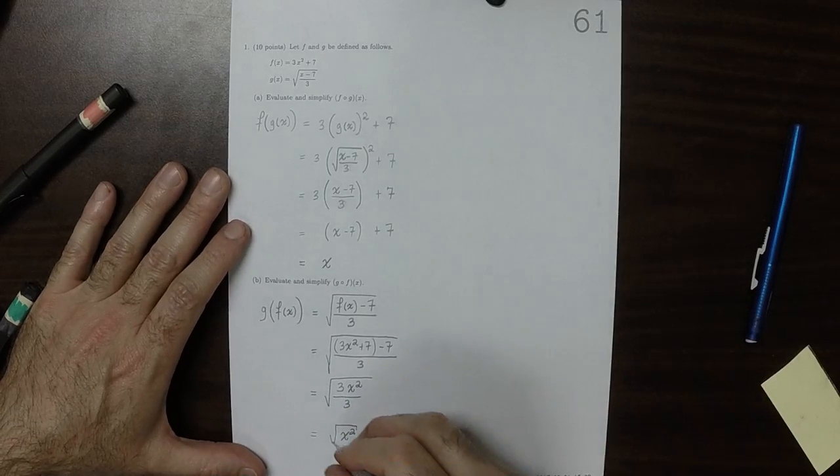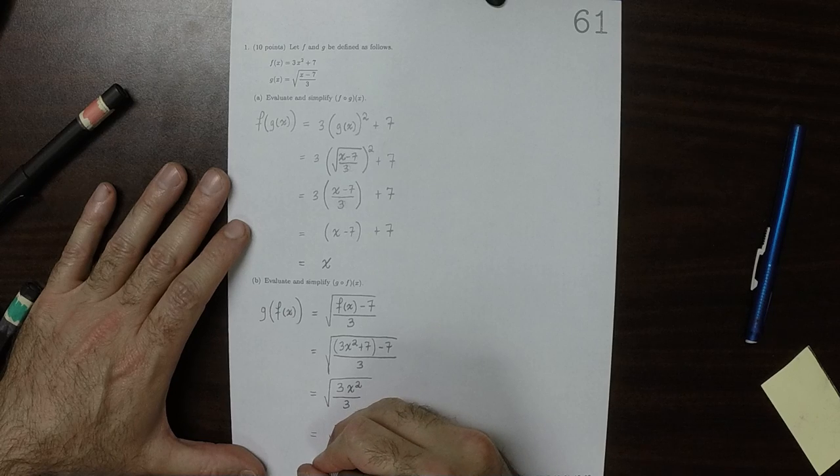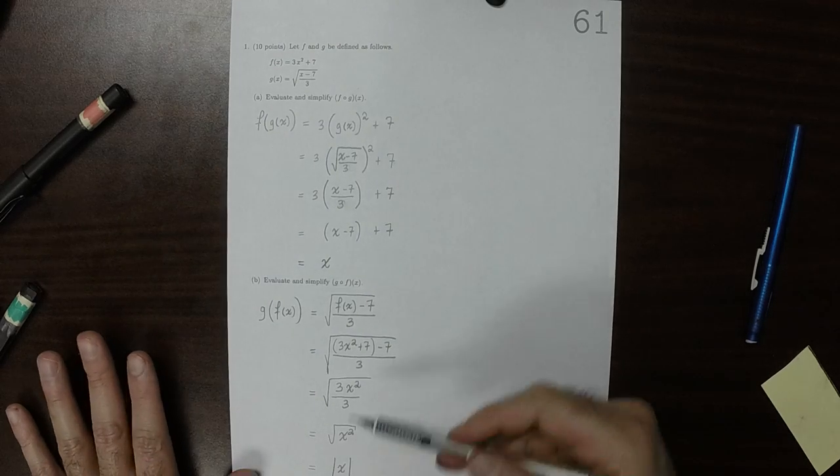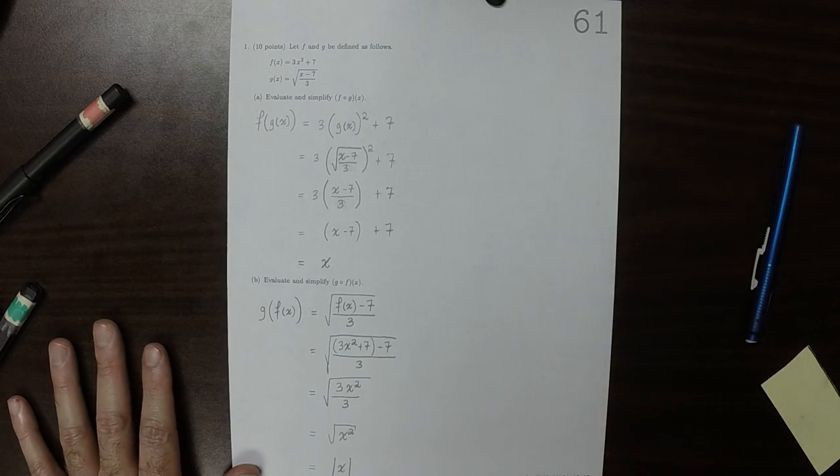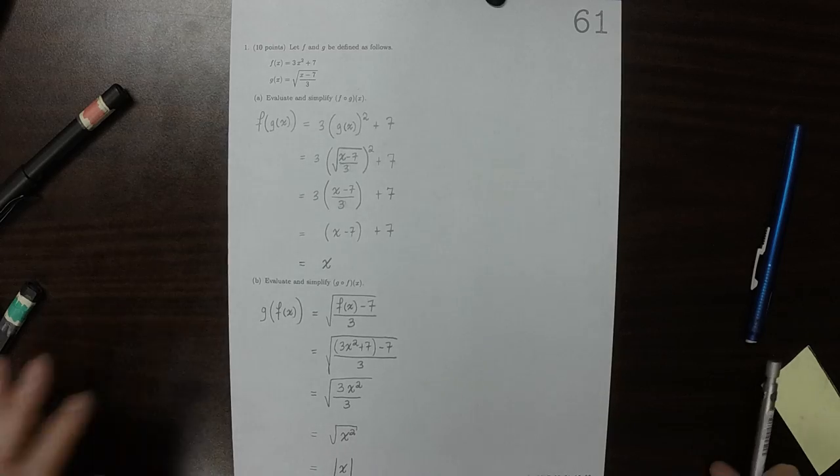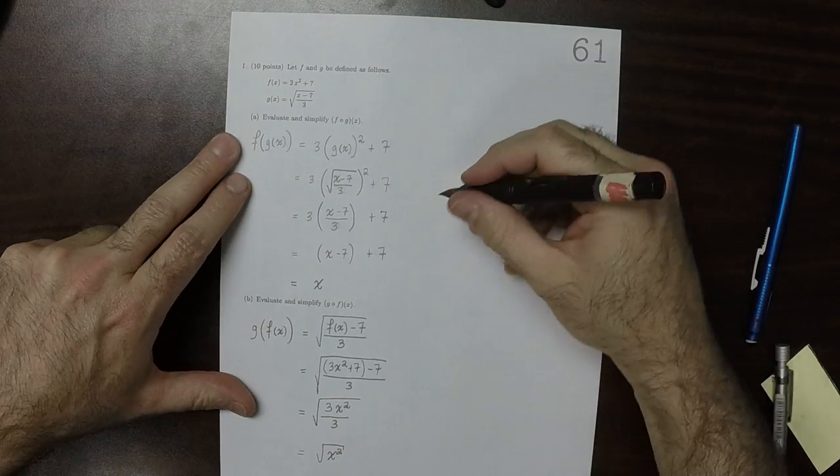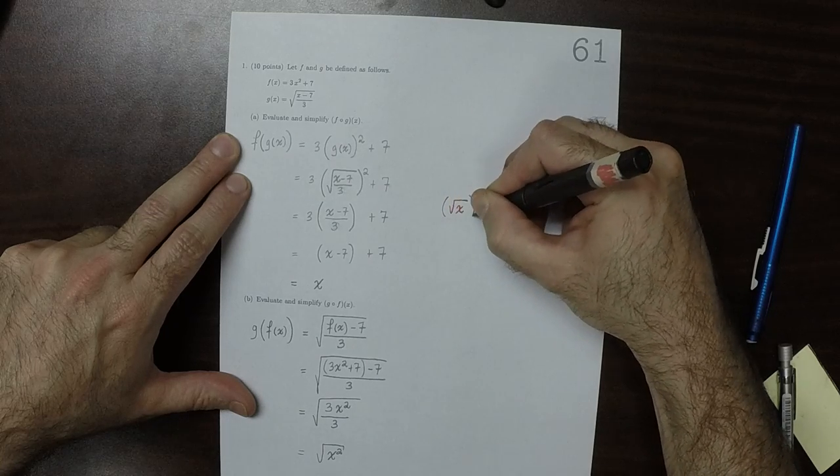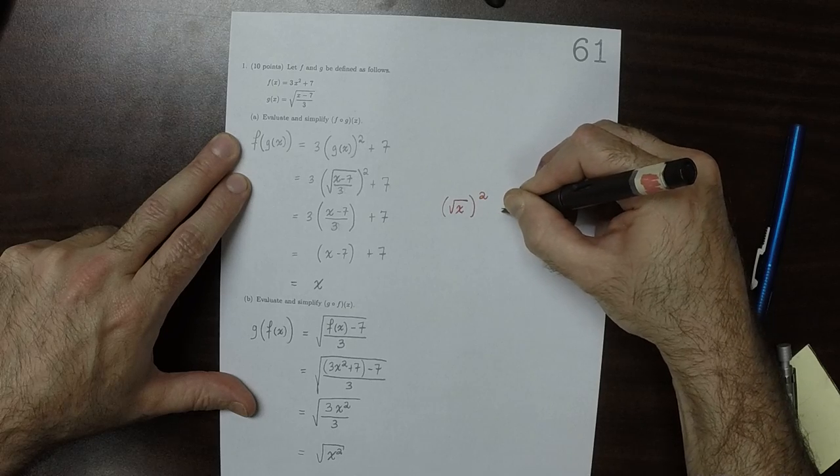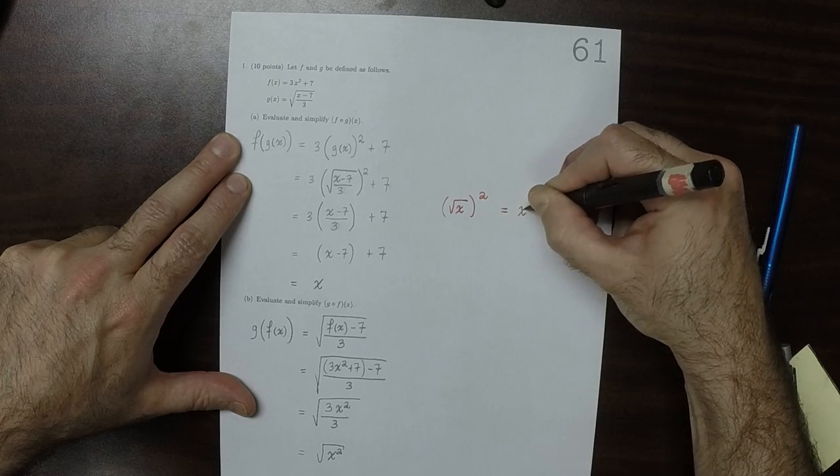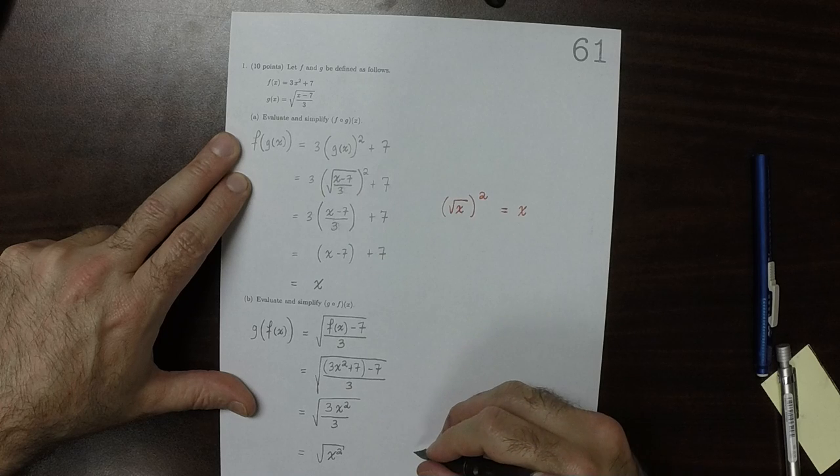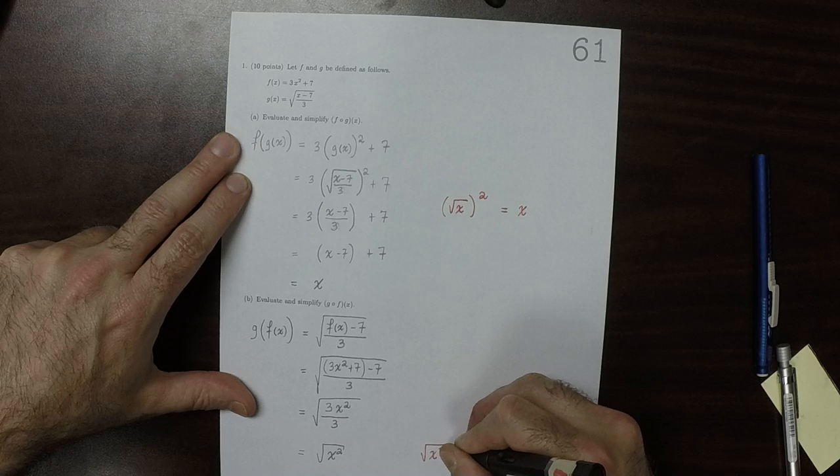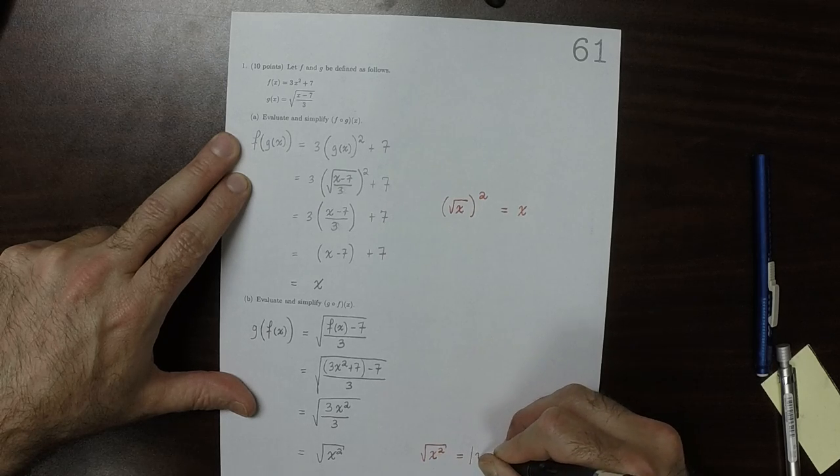And now, now the square root and the square do not cancel. This is absolute value of x. So the distinction between these two cases is that for the one on the top, when you take a square root and you square it, this is x. But when you do it in the opposite order, the square root of x squared, this is the absolute value of x.